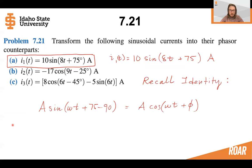So if we want to convert this, we know that 75 minus 90 must be equal to the angle in this standard sinusoid. So we have the amplitude 10.